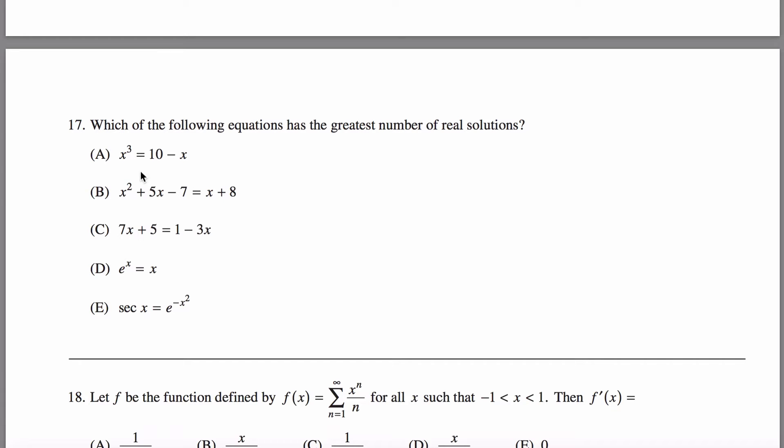x³ = 10 - x. It's tempting to think this might have three solutions because you see x to the third power here, but rather than set this equal to zero and try to factor or do something like that, I think it's easier to graph x³ approximately. So that looks something like, well, there's a terrible x³ like that.